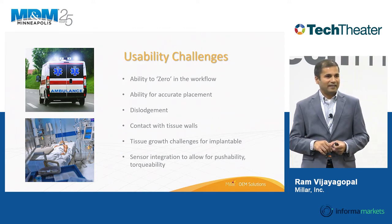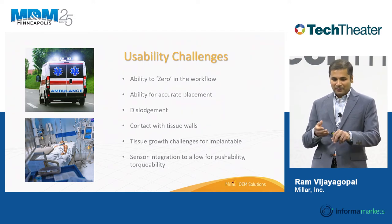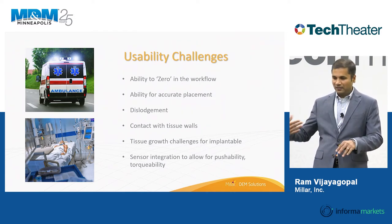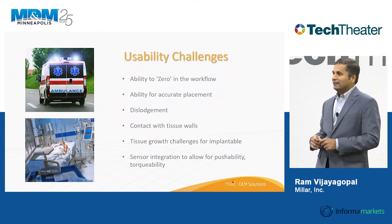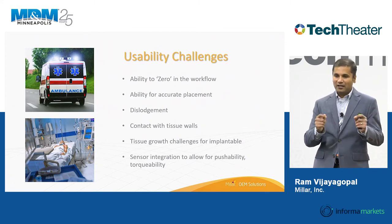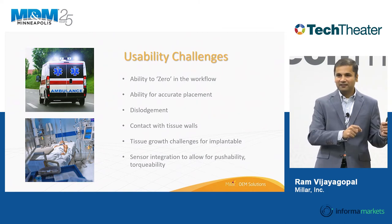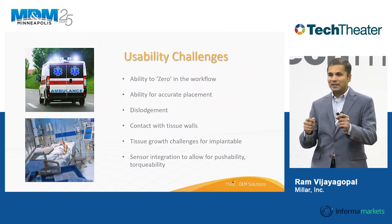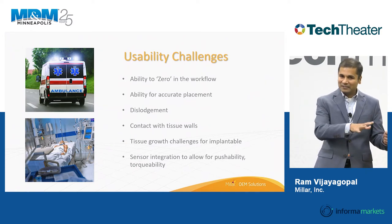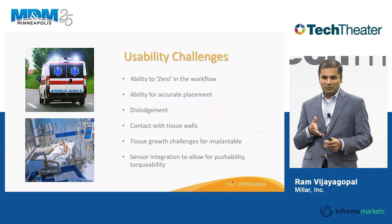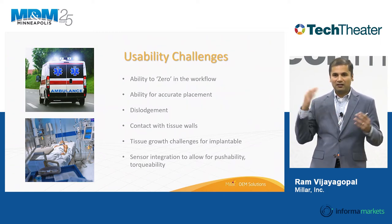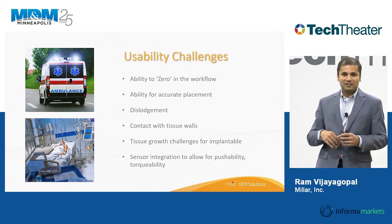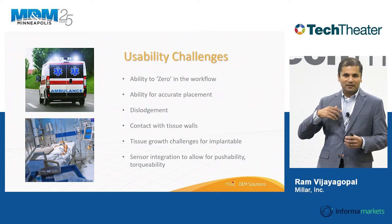Once a sensor is built into a catheter, can it be placed accurately? The designer might intend the sensor to face upward, but the physician may deploy it differently. These devices often get used differently from how they were designed, by people entirely different from those who designed them. Dislodgement is also a concern — if a sensor is navigating a bend in the heart and staying there for three weeks, it will experience many heartbeats. Is there a risk of the sensor popping out?